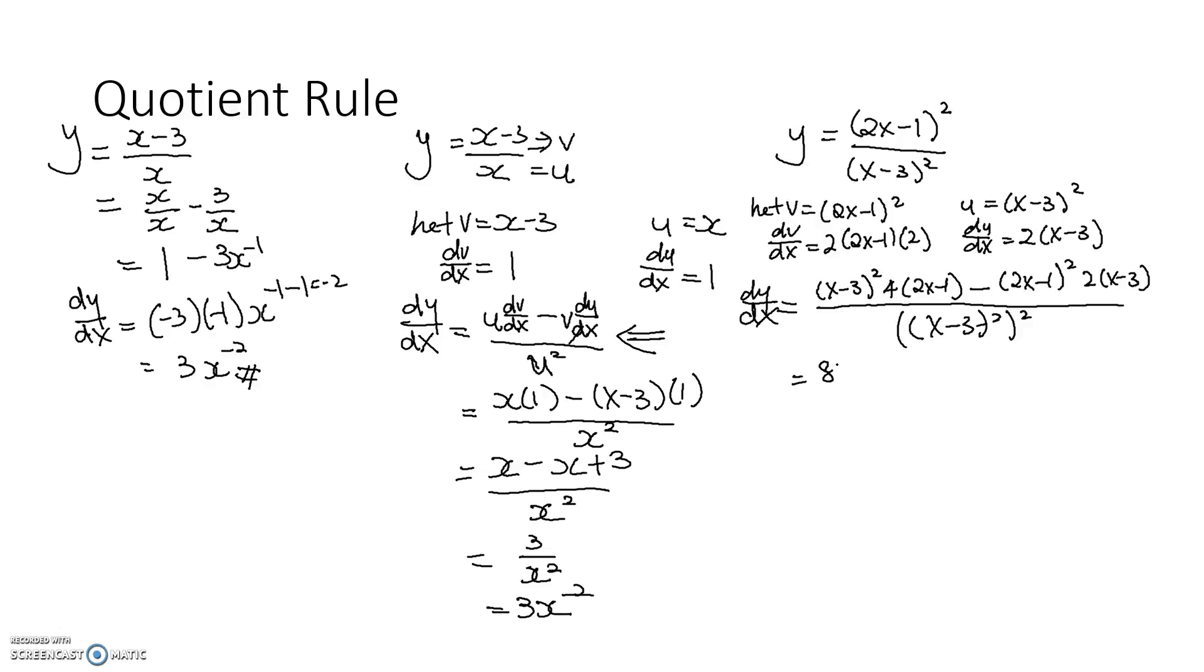So, what I do next is I simplify. 8x minus 4, x minus 3 squared, minus 2x minus 3, 2x minus 1 squared, over x minus 3 power of 4. Now, you should make it a good habit to see whether or not you can actually factorize it. So, this is, there was actually a 2 here. I made a mistake of putting the 2 inside. Or rather, putting the 4 inside. But if we take it out again, you see that it's 2x minus 1, x minus 3 squared, minus 2x minus 3, 2x minus 1 squared, over x minus 3 power of 4.